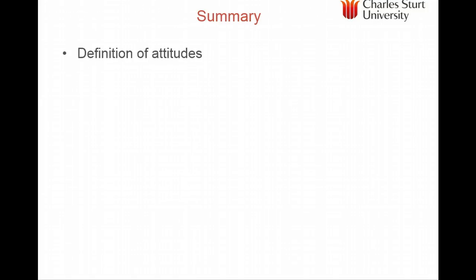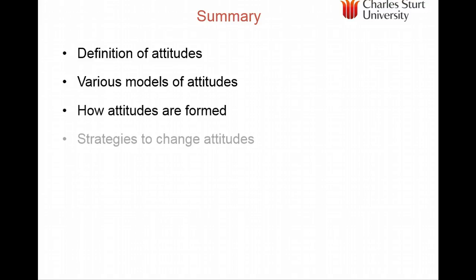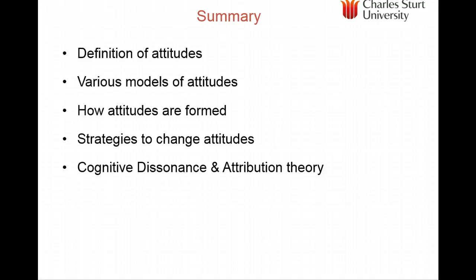To conclude, we looked at the definition of attitudes as a learned predisposition towards an object. We looked at various models: attitudes towards the object, attitudes towards behaviour (the theory of reasoned action), and attitude of planned behaviour, which includes our degree of control. We looked at how attitudes are formed — you're not born with an attitude, but they're formed from a number of sources including direct experience. We also covered strategies for changing attitudes, and cognitive dissonance and attribution theory — how consumers construct beliefs and how we can influence or change those beliefs.